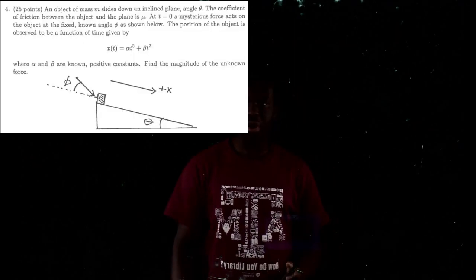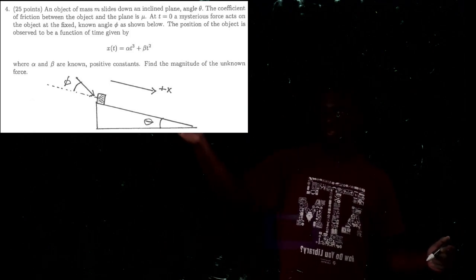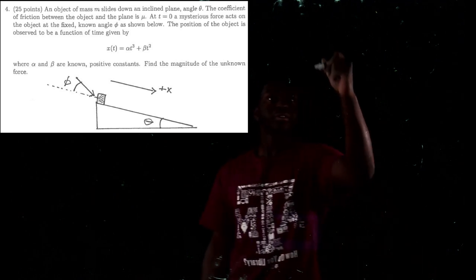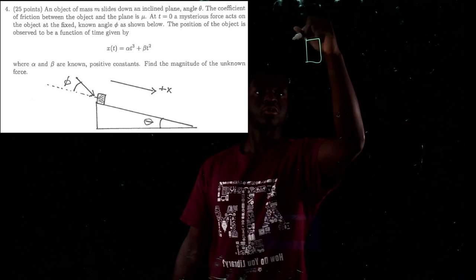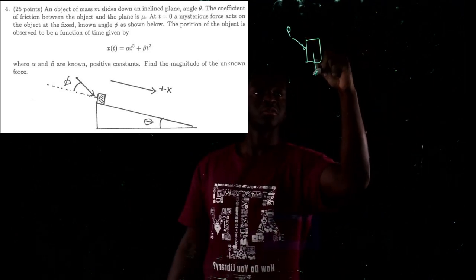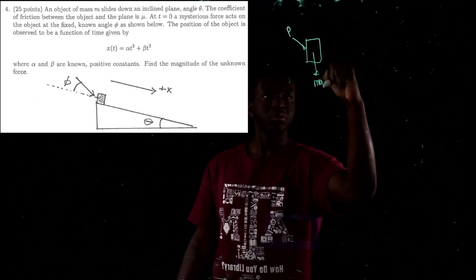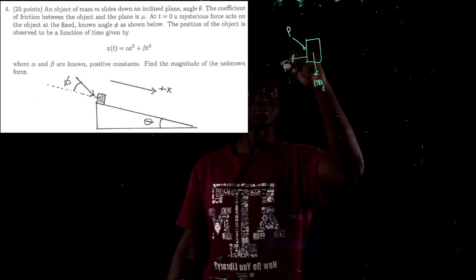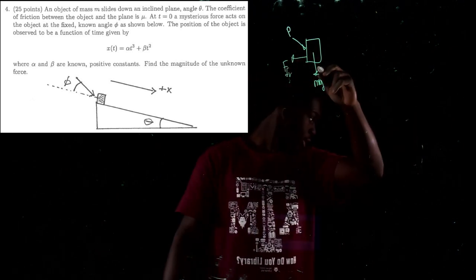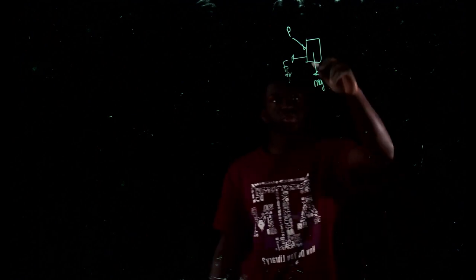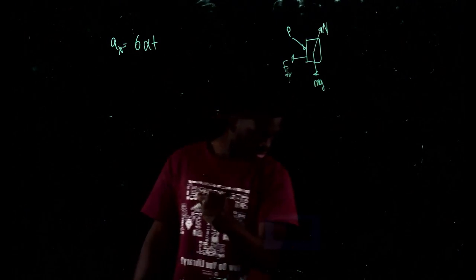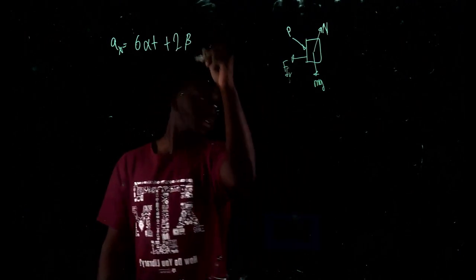Now number 4. We start by drawing the free body diagram — you can take a picture from the screen. The forces are: applied force P, gravity Mg, force of friction, and normal force perpendicular to the ramp. They gave us X of T equals alpha T cubed plus beta T squared, so velocity is 3 alpha T squared plus 2 beta T, and the acceleration is Ax equals 6 alpha T plus 2 beta.